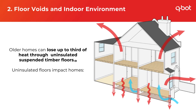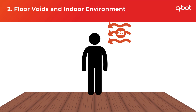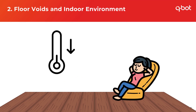Older homes can lose up to a third of their heat through uninsulated suspended timber floors. However, heat loss from floors is far more complex than just considering the U-value. Air tightness and infiltration through floorboards significantly impacts energy consumption. Drafts make people feel colder at any given temperature due to the temperature difference — the delta T — between the head and the feet. If your head is 28°C but your feet are at 20°C, you will feel colder.